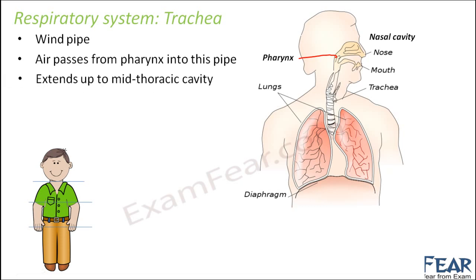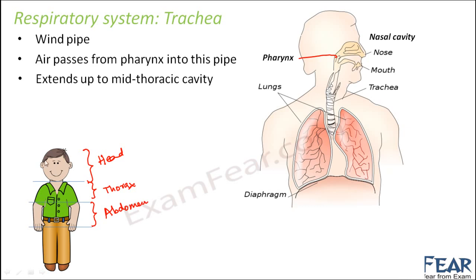The trachea extends up to the mid thoracic cavity. Our body is divided into three parts: the upper portion is the head, the next is the thorax, and the lower portion is the abdomen. The thoracic cavity is the cavity containing the thorax, and the abdominal cavity is below it. The trachea extends only up to the middle of the thoracic cavity, after which it enters the lungs where it divides into bronchi and bronchioles.